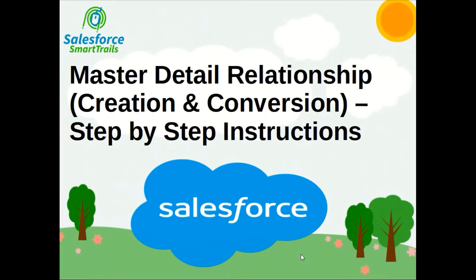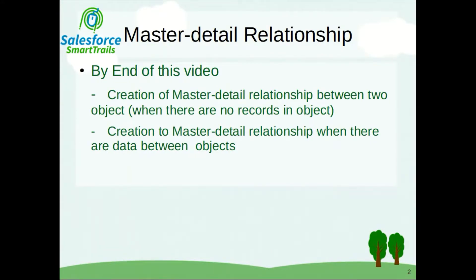Here in this video, we are going to see how we can create a master detail relationship when there are no data and when there are some data in the objects. By the end of this video, you'll be able to create master detail relationship for objects with no records, which is pretty simple and straightforward. And then we are going to see how the master detail relationship can be created when we have some records in the object.